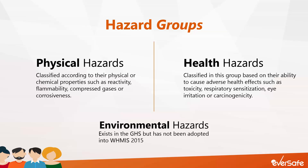While an environmental hazards group exists in the GHS, it has not been adopted in WHMIS 2015. However, WHMIS 2015 allows manufacturers, suppliers, and employers to include environmental hazards in their labels and safety data sheets whenever possible.